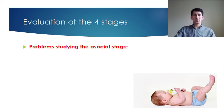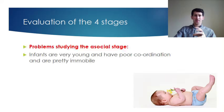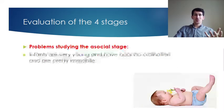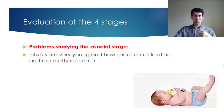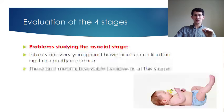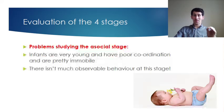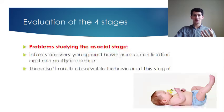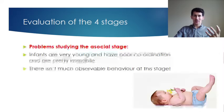A final issue is the difficulty in studying infants during the asocial stage. These babies are extremely young — they have very poor coordination, are very immobile, and basically cannot even move their head. There is very little to observe at that stage, so although we identify what happens during the asocial stage, it is very difficult to observe because infants don't do very much at all, and any movements they do make are hard to interpret in terms of cause or meaning.